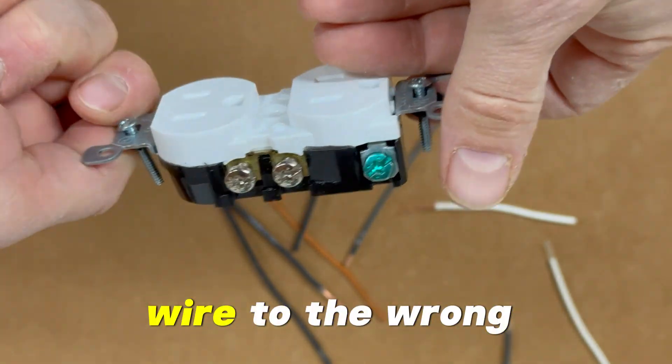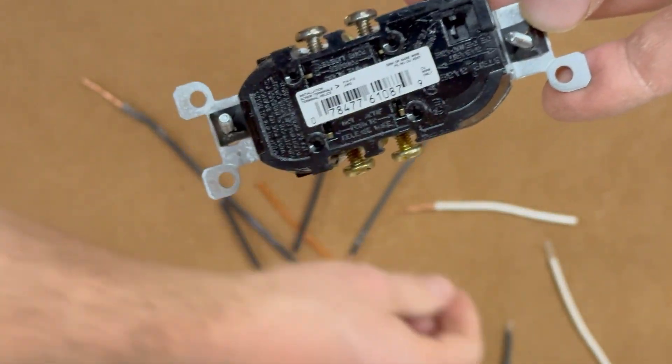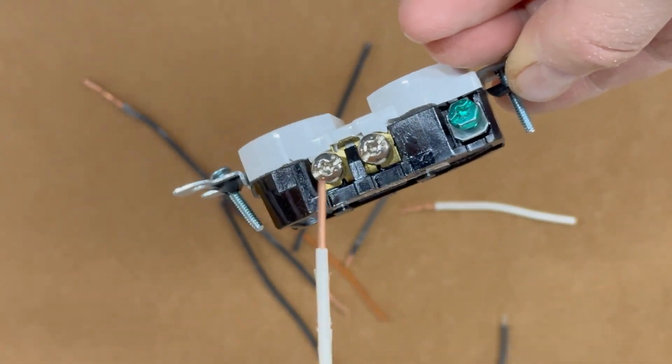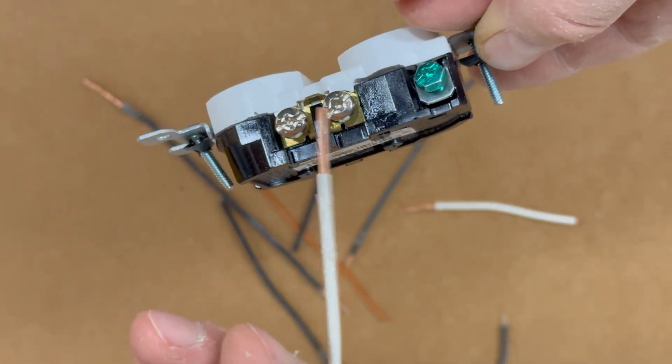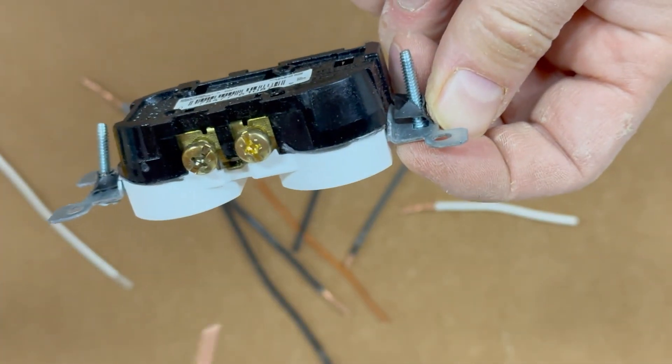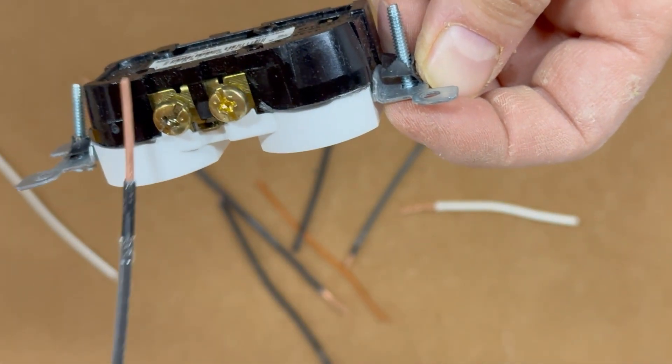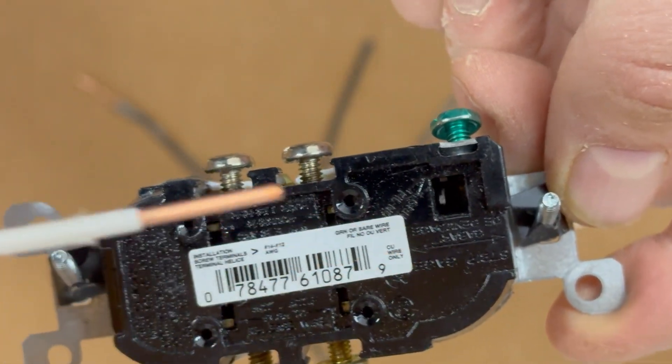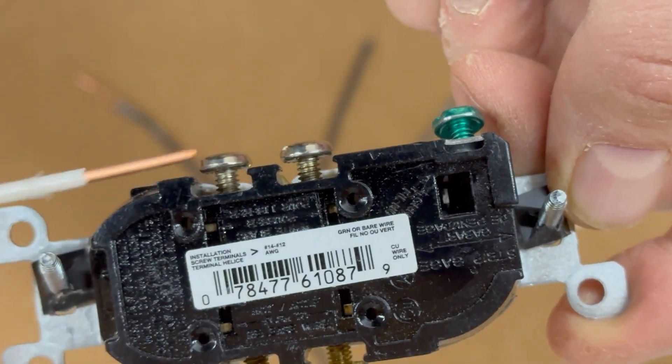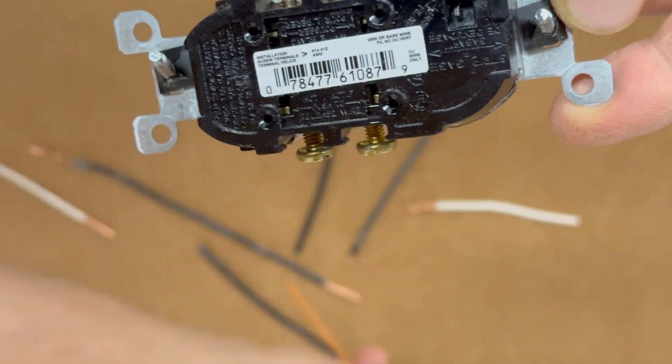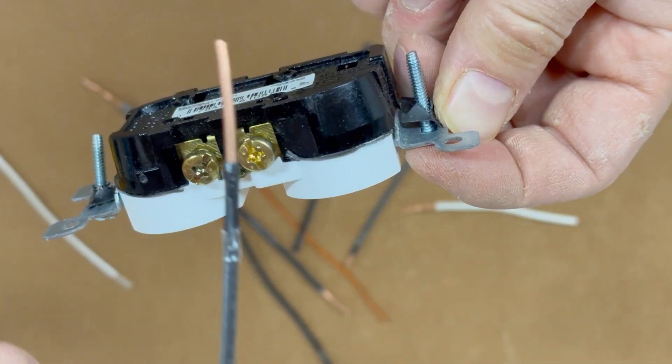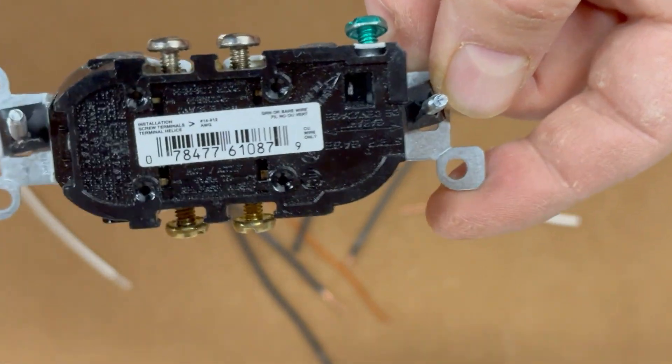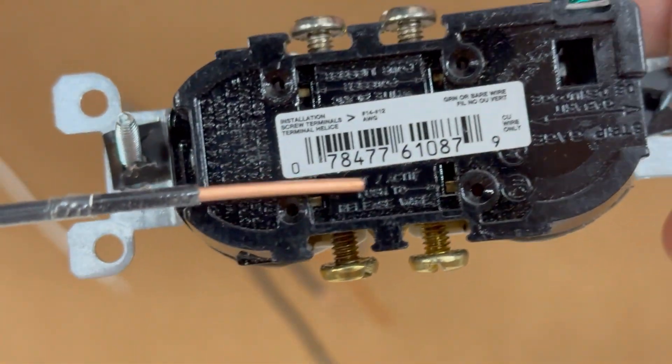Connecting the wrong wire to the wrong terminal. If you take a close look at an outlet, you will notice that the screws on one side are silver, while the screws on the other side are brass or goldish in color. It is important to remember that the silver screws are always connected to the white wire, also known as the neutral wire. The brass or goldish screw should always be connected to the black wire, which is called the hot wire.